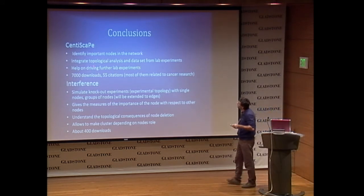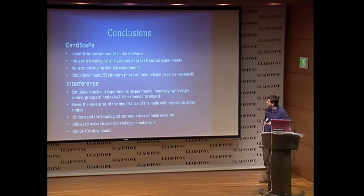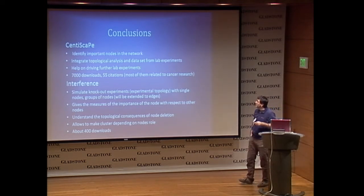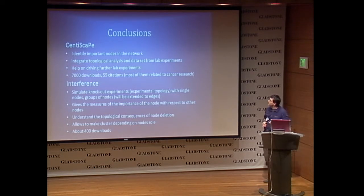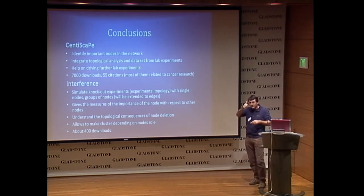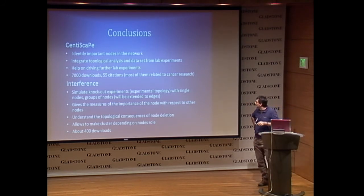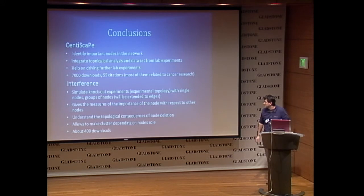Conclusion: CentiScape allows you to identify important nodes in the network and allows integrating topological analysis with experimental data to help drive further experiments. At the moment, we have about 7,000 or fewer than 55 citations. The interference plugin is the tool that allows simulating knockout experiments — you can remove just one node or a set of nodes, and you can also extend the notion to edges. It gives you a measure of the importance of a node with respect to the other nodes, and we have about 400 downloads.